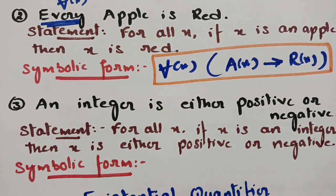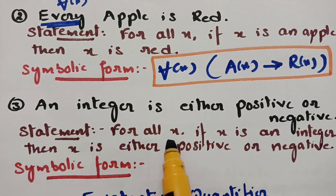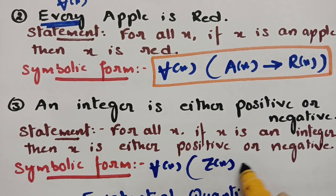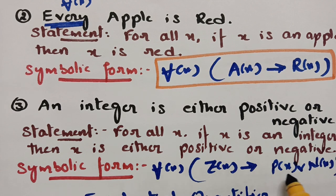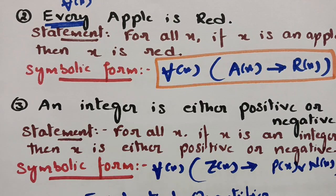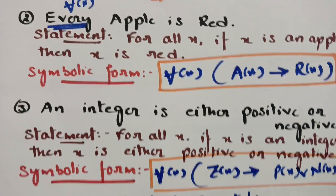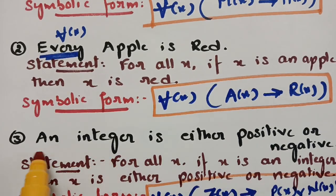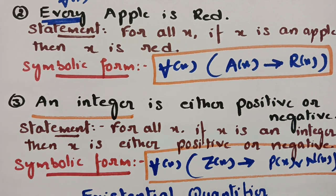The third example is 'An integer is either positive or negative.' Since there are so many integers, for all x, if x is an integer then x is either positive or negative. Symbolically: ∀x, Z(x) → (P(x) ∨ N(x)), where Z(x) denotes 'x is an integer', P(x) is positive, and N(x) is negative. These are examples of the universal quantifier.